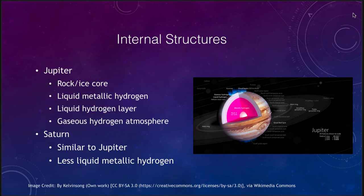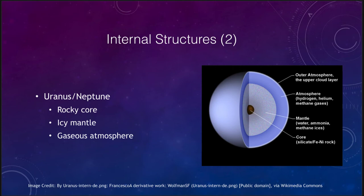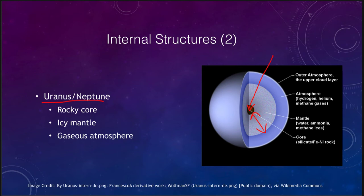The two outer Jovian planets have a slightly different structure. This applies to both Uranus and Neptune. We do see a rocky core — rock and metal at the center — and a very thick mantle compared to what we see in, for example, the Earth. The gaseous atmosphere consists of hydrogen, helium, and methane gases. Methane is what gives these planets their distinct color: methane absorbs red light, so the reds and oranges from the sun are absorbed, leaving only the blues and greens to be reflected back.